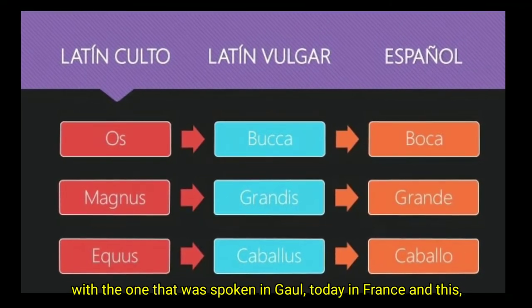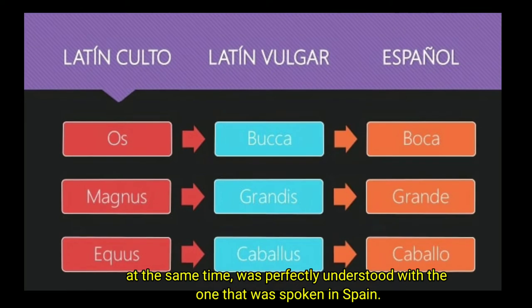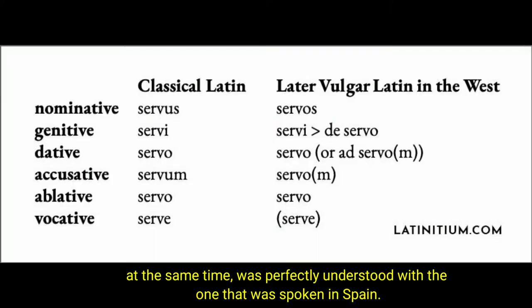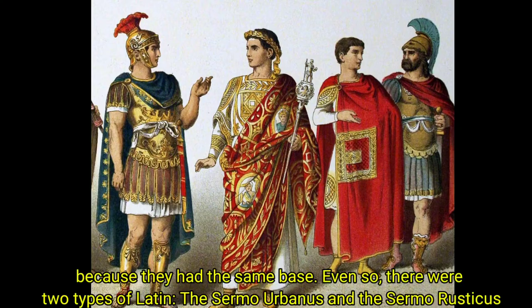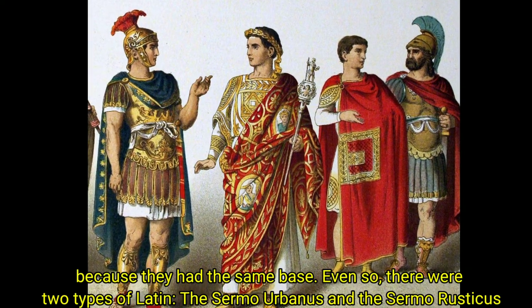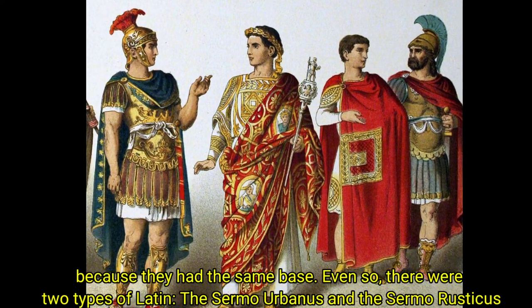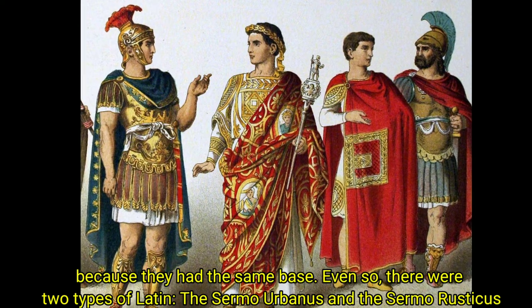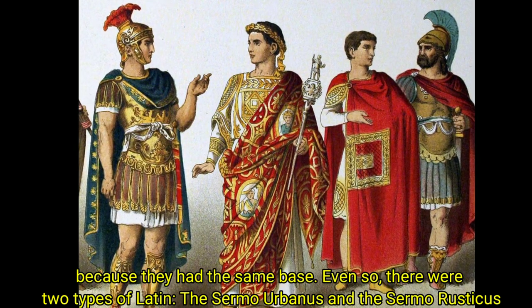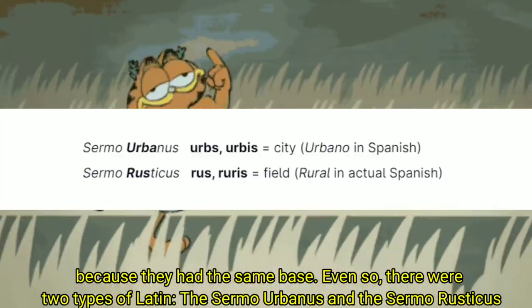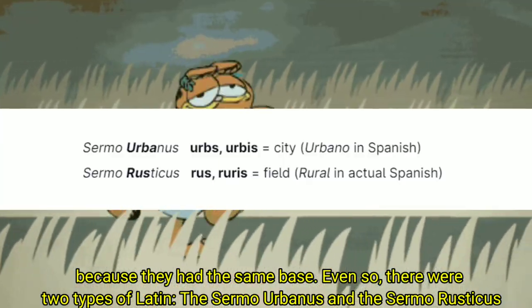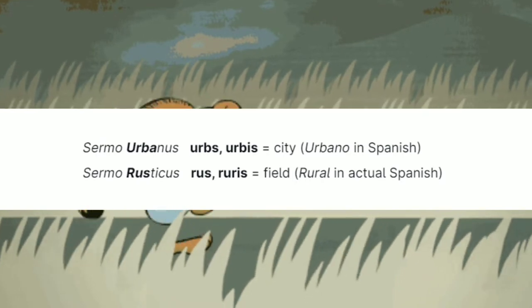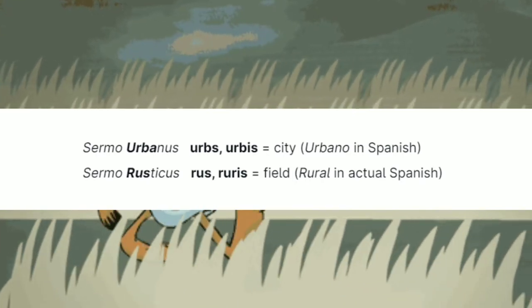The Latin that was spoken in all of Italy was perfectly understood with the one that was spoken in Gaul — today France — and this, in turn, was perfectly understood with the one spoken in Spain. So basically, in short, they all had the same base. Even so, there were two types of Latin: the sermo urbanus and the sermo rusticus.